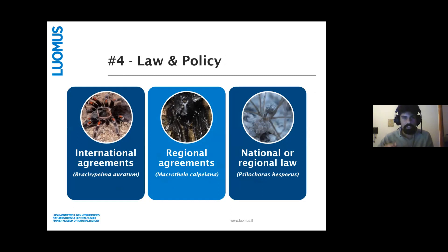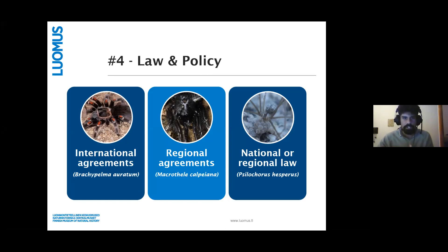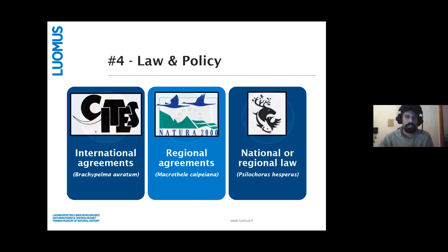For the regionally relevant measure of law and policy: there are a fair number of spider species covered by policy, though we would like to see much more. These vary in scope — there are spiders protected under international agreements such as Brachypelma auratum, regional agreements such as Macrothele calpeiana, and national law such as Psilochorus, which are respectively protected by CITES, Natura 2000, and the COSEWIC under Canadian national law.